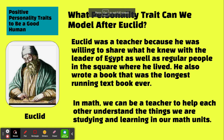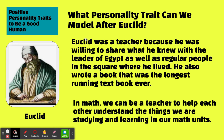Let's say the kids decided that Euclid was a teacher — they found the word 'teacher' on the positive personality traits list. From the text and video, they find out that he shared what he knew with the leader of Egypt, went out into the squares to share his knowledge with regular people, and also wrote a textbook called Elements — the longest-running textbook ever.